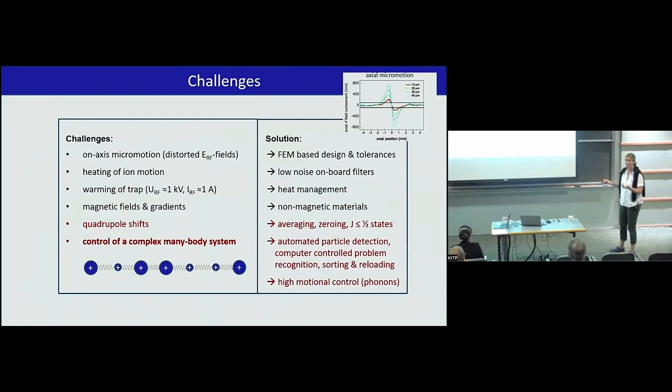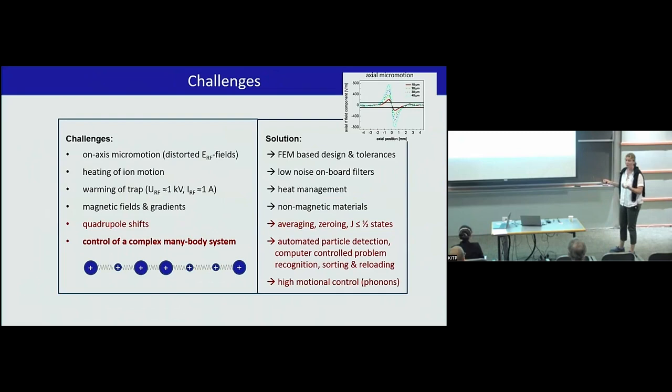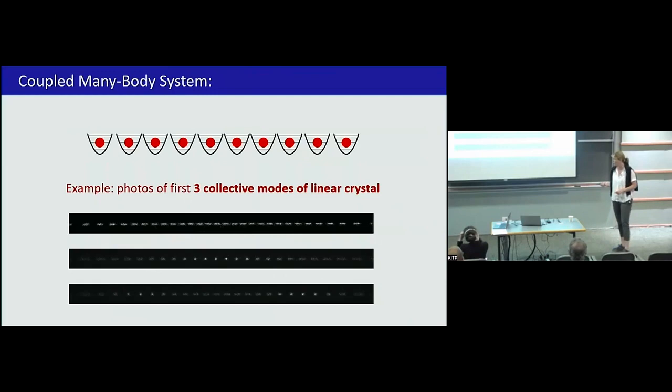I would like to first maybe start with the lower two, quadrupole shift, that's an intrinsic atomic property, and the many-body system. If you have an ion system, you have intrinsic long-range interaction. So you always have a coupled system, where the ions talk to each other, and that gives rise to phonons. You see a picture that we took from a common mode, the breathing mode, the Egyptian mode, out of phase, and you have to cool all the phonons, and you have to be sure that you have a control over this collective motion.